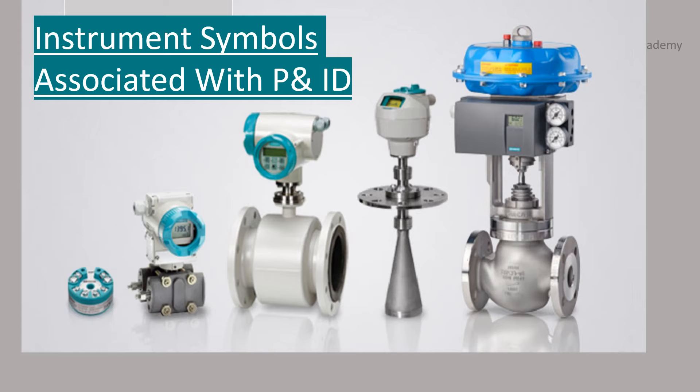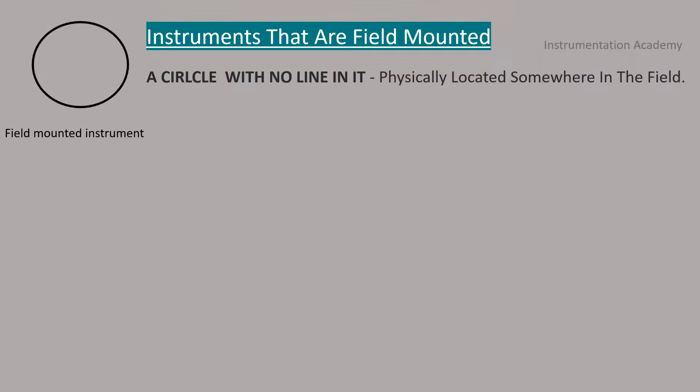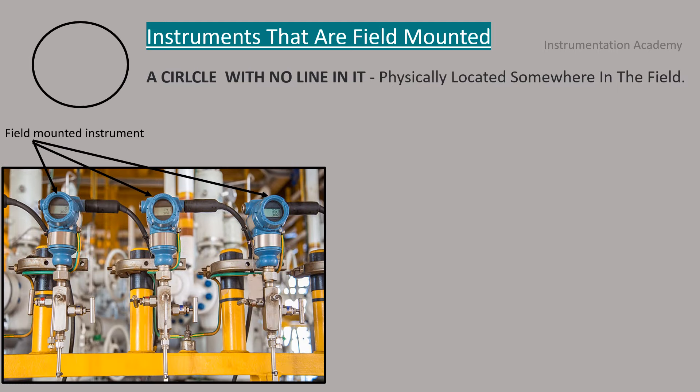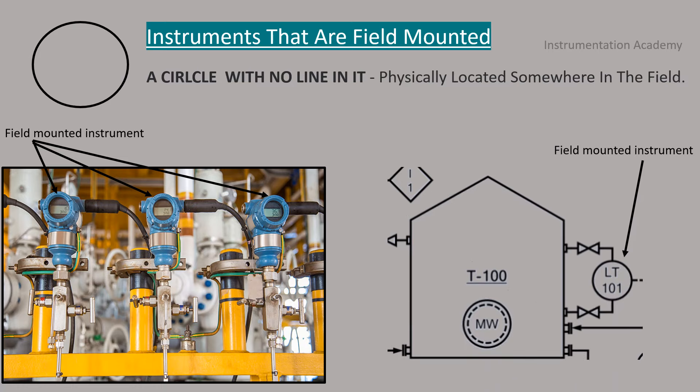Now let's move on to instrument symbols associated with P&ID. A circle with no line in it represents an instrument that is physically located somewhere in the field. This figure shows some field mounted instruments. This is how a field mounted instrument is represented in a P&ID.